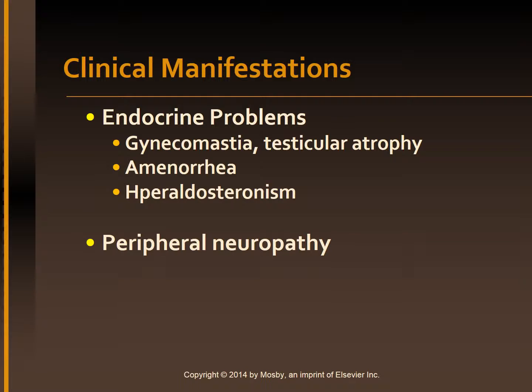Endocrine problems: normally the liver is very important in the metabolism of adrenocortical hormones, estrogen, and testosterone. In men with cirrhosis, gynecomastia, loss of axillary and pubic hair, testicular atrophy, and impotence with loss of libido may occur because of increased estrogen levels. In younger women with cirrhosis, amenorrhea may occur, and in older women there may be vaginal bleeding. The liver fails to metabolize aldosterone adequately, resulting in hyperaldosteronism with subsequent sodium and water retention and potassium loss. Peripheral neuropathy is a common finding in alcoholic cirrhosis and is probably due to a dietary deficiency of thiamine, folic acid, and cobalamin.